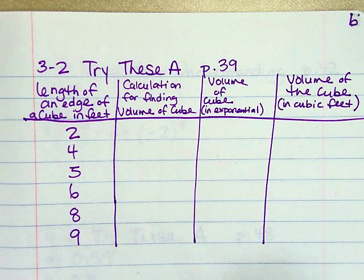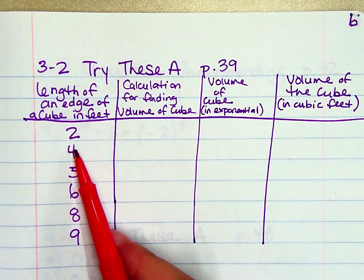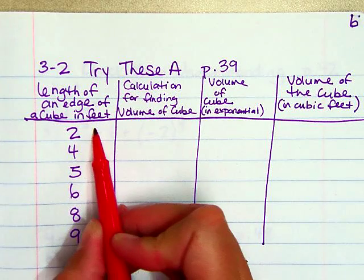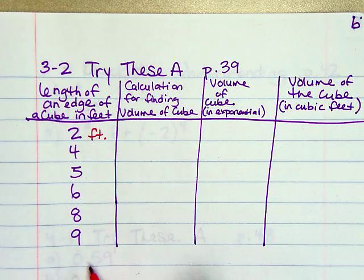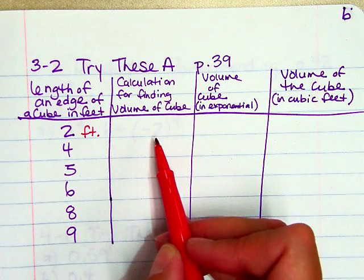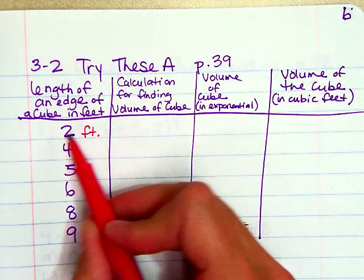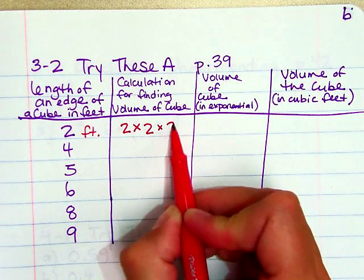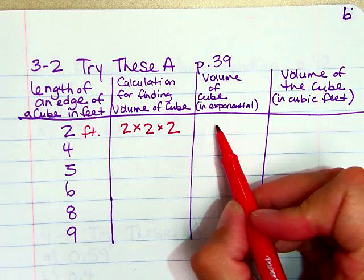So first I have the length of an edge in feet. Each one of these units if it was written would say feet by it all the way down. And then I'm going to do a calculation. This is going to be expanded form. So if I'm going to do a volume of a cube that is length times width times height in expanded form.